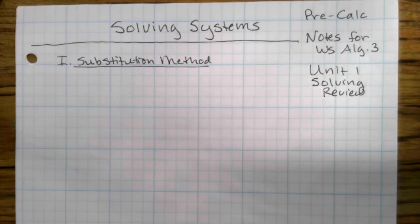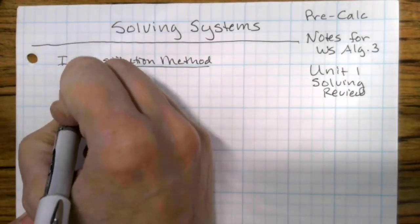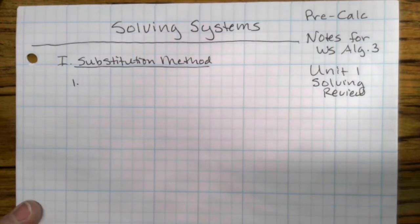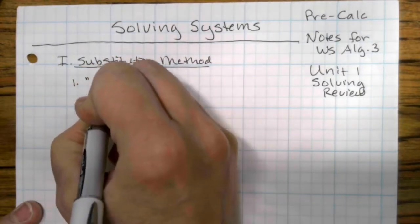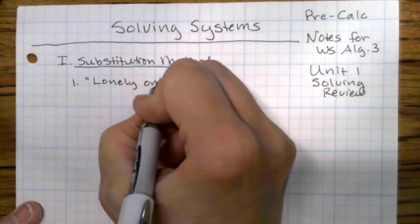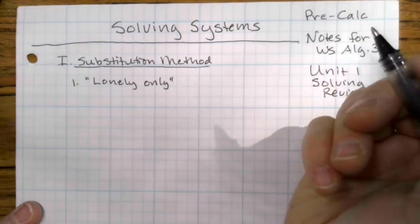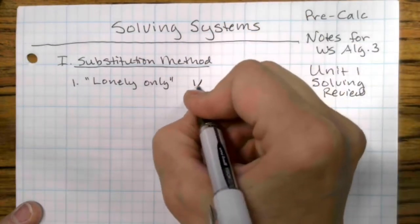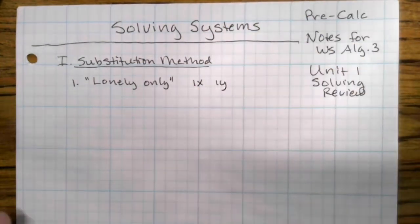Substitution method is the first one we're going to cover. Substitution method is usually a good idea when you have what I like to call the lonely only, which is just an expression that has a 1x or a 1y in it that makes it easy to solve for.